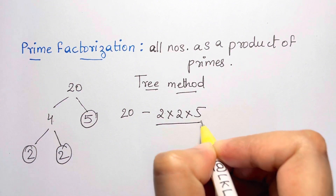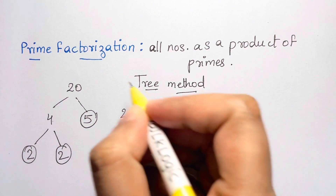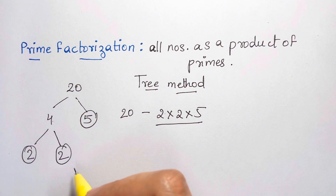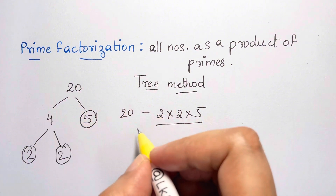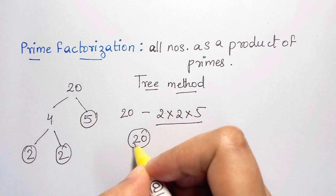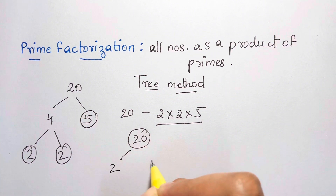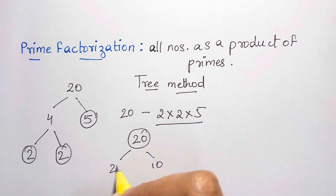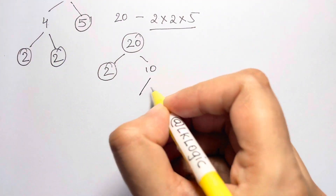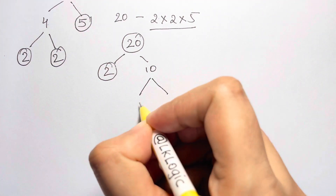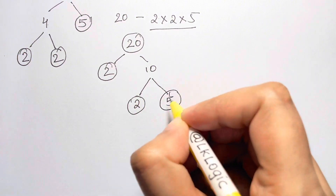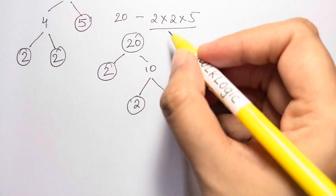That's prime factorization using the tree method. You can also break it down differently — for example, starting with 2 and 10. Circle 2 since it's prime, then break 10 into 2 and 5, both prime. You still get the same result: 2 × 2 × 5.